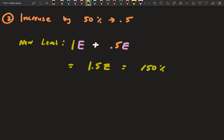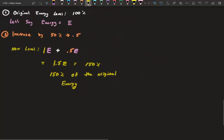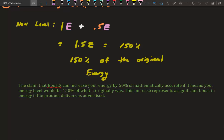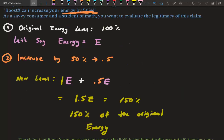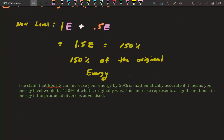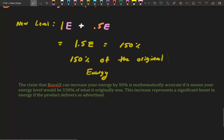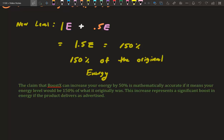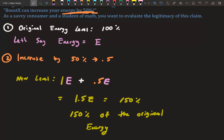So what we're saying is we'll have 150% of our original energy. The claim that Boost X can increase energy by 50% is mathematically accurate if it means your energy level would be at 150% of what it originally was. This increase represents a significant boost if the product delivers as advertised. This example was also used to practice setting up variables and combining like terms.